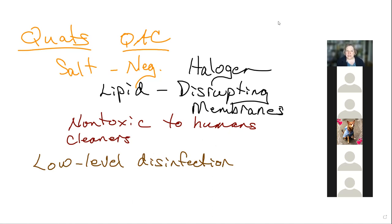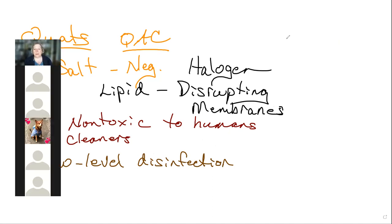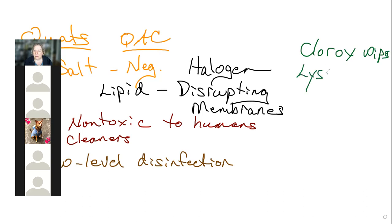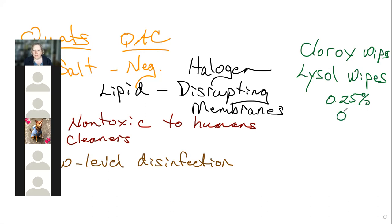We tend to see quats in disinfecting wipes — Clorox wipes and Lysol disinfecting wipes. They contain about 2.25% total quat — a combination of several different quaternary ammonium compounds added together.